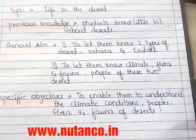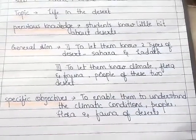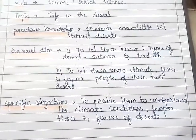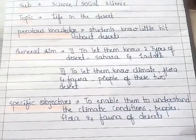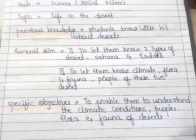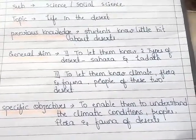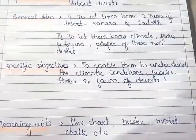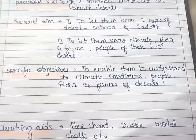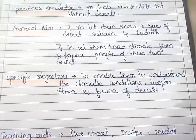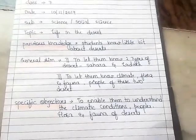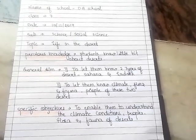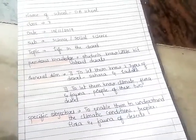For previous knowledge, we always have to write what the student is already aware of — so the student has a little knowledge about deserts. For the general aim, I have written two points: to let them know the two types of desert, Sahara and Ladakh, and to let them know the climate, flora, fauna, and people of these two deserts.